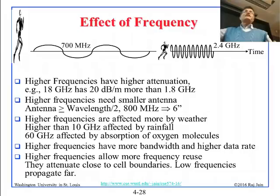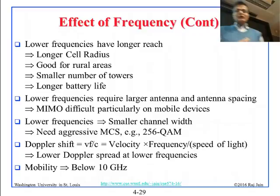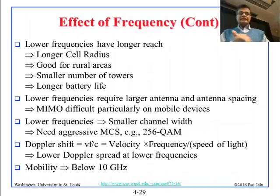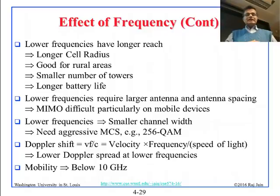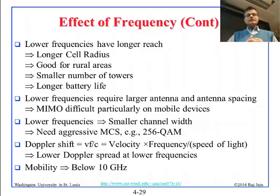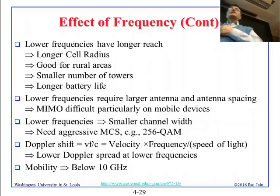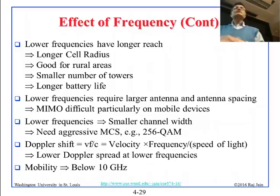Low frequencies have longer reach — longer cell radius. Television channels cover a whole city; you cannot reuse the same frequency within that city, which is good for rural areas needing fewer towers. Longer battery life is also a benefit: at low frequency, a phone transmitting one kilometer requires much less power because there is less attenuation, so battery life improves.